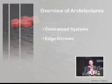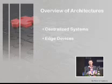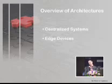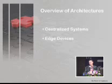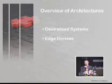In the market we can find basically two main families of products. We have centralized systems and we have edge devices. In the centralized system we have a central point, and in the edge device we have a distributed system. Both types of systems have some weaknesses and some advantages of course.